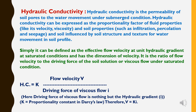Hydraulic conductivity is the permeability of soil pores to water movement under submerged conditions. It can be expressed as a proportionality factor involving fluid properties like velocity and viscosity, and soil properties like infiltration, percolation, and seepage. Simply defined, it is the effective flow velocity at unit hydraulic gradient under saturated conditions, and has the dimensions of velocity. It is the ratio of flow velocity to the driving force of viscous flow under saturated conditions: K = v / i, where v is flow velocity and i is the hydraulic gradient — the proportionality constant of Darcy's law — giving v = K × i.